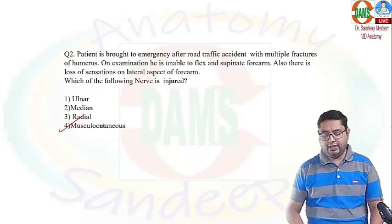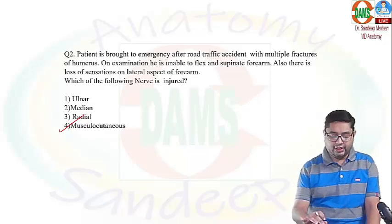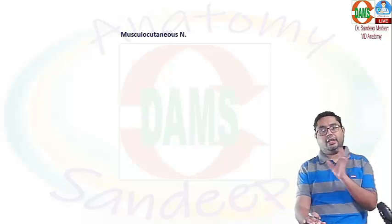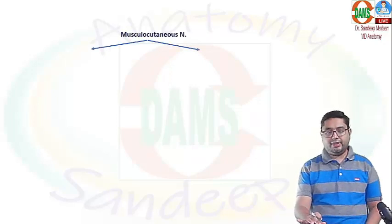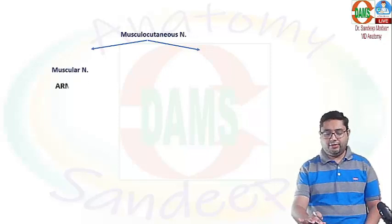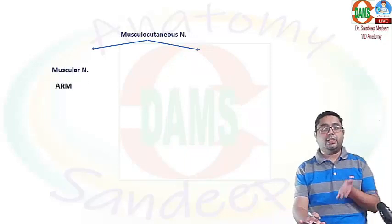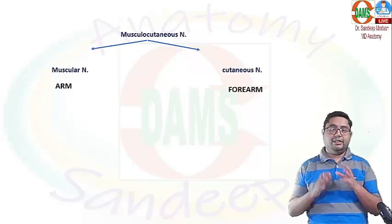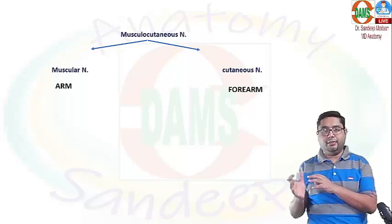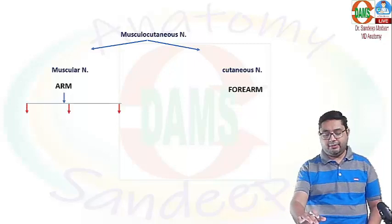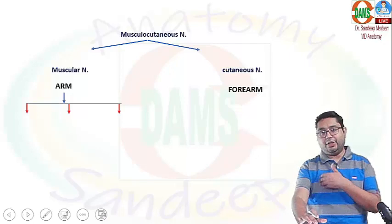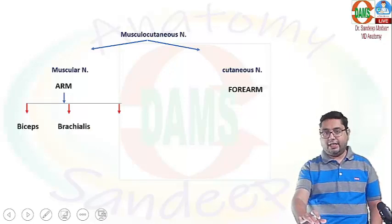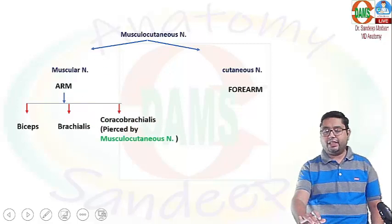Looking at the history and the options, the answer is pretty obvious — that is the musculocutaneous nerve. Let us discuss the anatomy behind it. The musculocutaneous nerve has two components: muscular and cutaneous. It is muscular in the arm and cutaneous in the forearm. When we say it is muscular in the arm, it supplies three muscles in the anterior compartment.